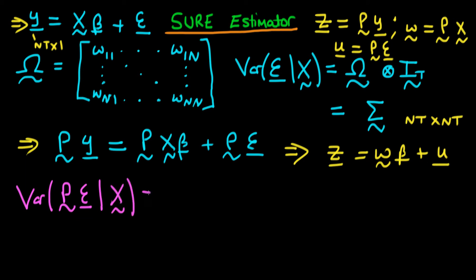And because we've assumed that the zero conditional mean assumption is upheld, this is the same thing as P times the expectation of epsilon times epsilon prime, given that we have X times the transpose of P. And we know that this term inside the parenthesis here really is just the variance of epsilon. So actually, I could have just written the variance of epsilon there. Perhaps that's a little bit too much notation.